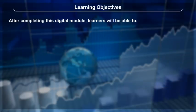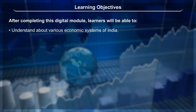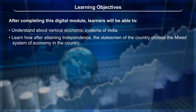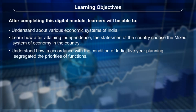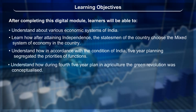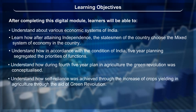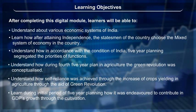Learning objectives: After completing this digital module, learners will be able to understand various economic systems of India, learn how after attaining independence the statesmen chose the mixed system of economy, understand how in accordance with the conditions of India five-year planning segregated priorities of functions, and understand how during the fourth five-year plan the green revolution in agriculture was conceptualized.